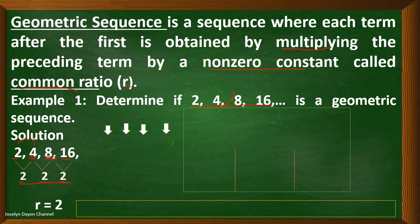In other words, we obtain the next term by multiplying the preceding term by 2. For example, how did we get 16? We multiply 8 by 2. And if we want to get the next term, just multiply 16 by 2. So, 16 times 2, we will have 32. That is the concept of geometric sequence.